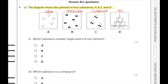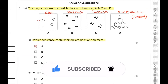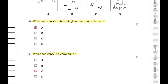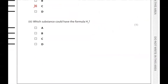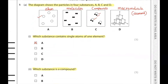The question asks which substances contain single atoms of one element — the answer is a, because these atoms are not joined with any other atoms. Which substance is a compound? The answer is c, because it contains atoms of two different elements that are chemically bonded together. Which substance could have the formula H2? That would be b, because they are similar atoms joined together by covalent bonds.